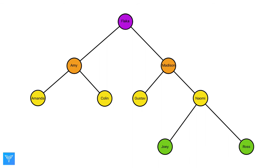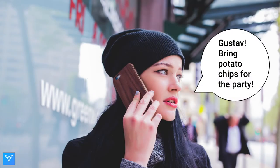For example, if looking for Gustav's number, we would start at the root, Flarka. Since Gustav appears later than Flarka, we would move to the right to Madison. Since Gustav appears earlier than Madison, we would move to the left and voila, we found Gustav. This node would store the information needed to contact Gustav, such as his phone number.